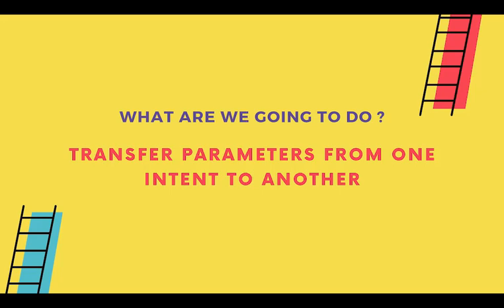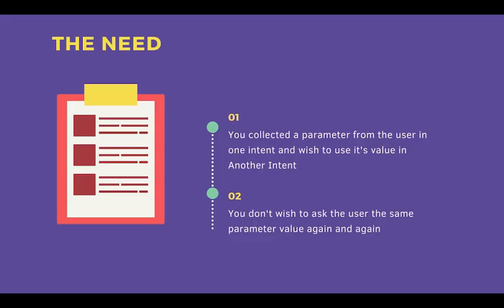But do we really need 250 contexts? That's where the need arose to use parameters as context — to transfer parameters from one intent to another with the help of context. With just one context, you can transfer a parameter from one intent to another. Parameter values can have unlimited numbers of values — 1000, 2000, 3000 — so in a sense you are effectively having many contexts simultaneously.